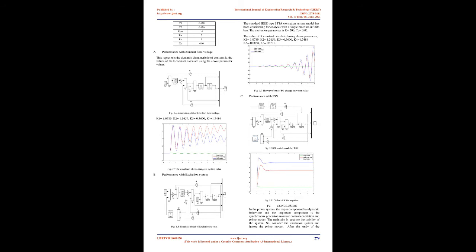Performance with constant field voltage: this represents the dynamic characteristic of constant K. The values of the K constants calculated using the above parameter values. Fig 1.6 Simulink model of constant field voltage: K1 = 1.0789, K2 = 1.3659, K3 = 0.3600, K4 = 1.7484. Fig 1.9 the waveform of 5% change in system value. C: performance with PSS. Fig 1.7 the waveform of 5% change in system value. B: performance with excitation system. Fig 1.10 Simulink model of PSS. Fig 1.8 Simulink model of excitation system. Fig 1.11: value of K5 is negative.